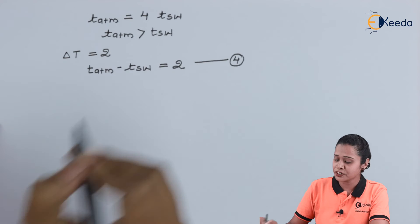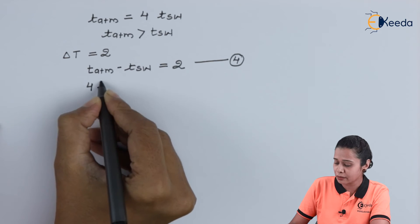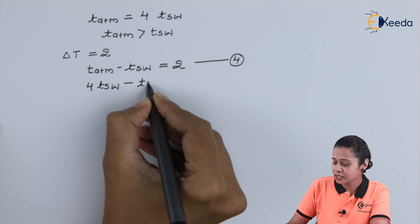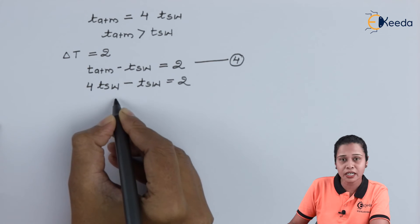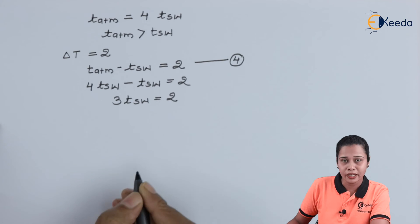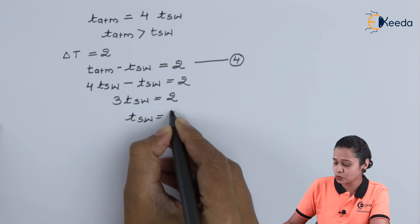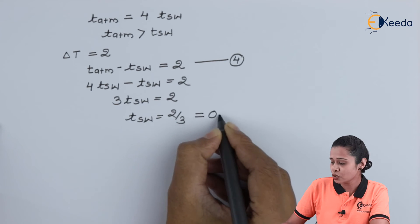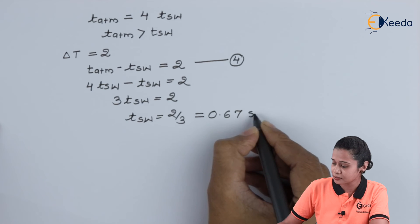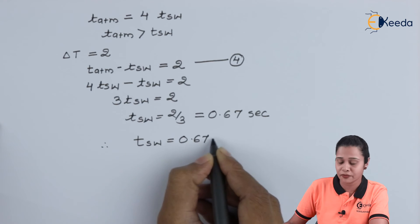Substituting equation 3 into equation 4: 4 × T_seawater − T_seawater = 2, so 3 × T_seawater = 2. Hence T_seawater = 2/3 = 0.67 seconds. The time taken by the signal to travel through the seawater is 0.67 seconds.